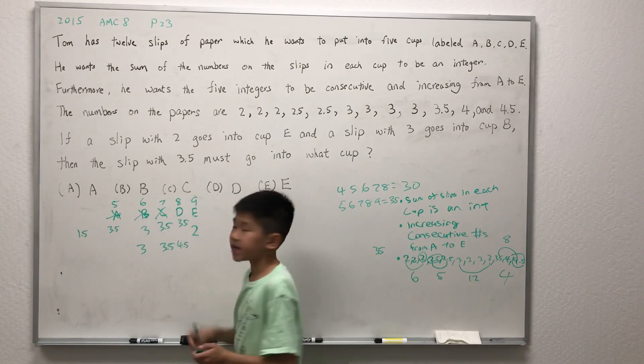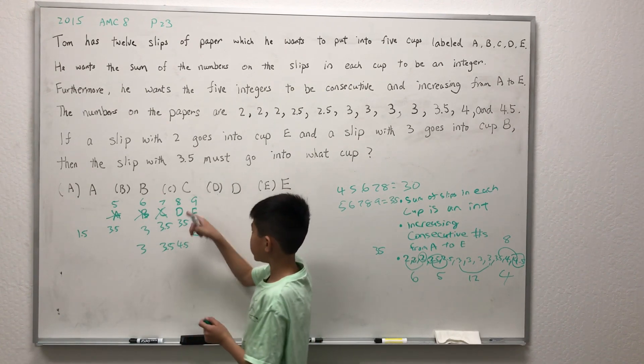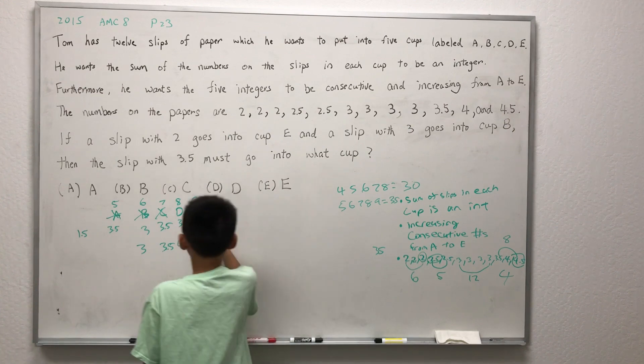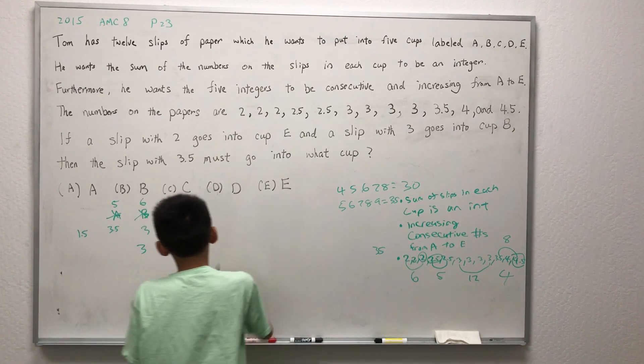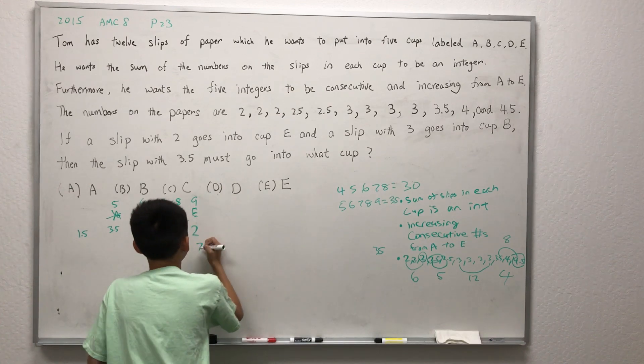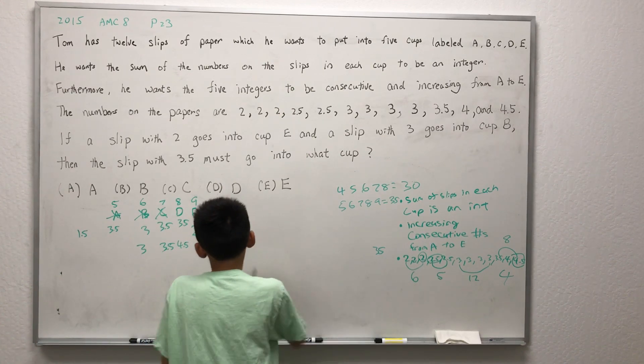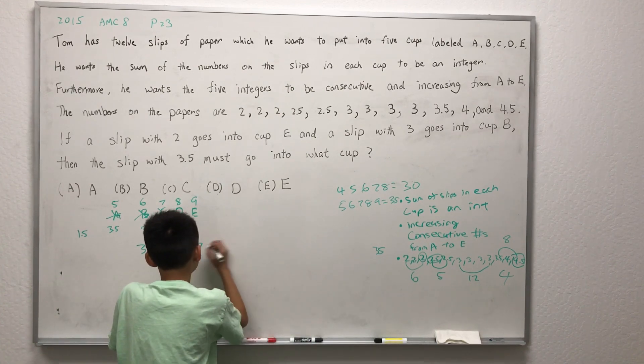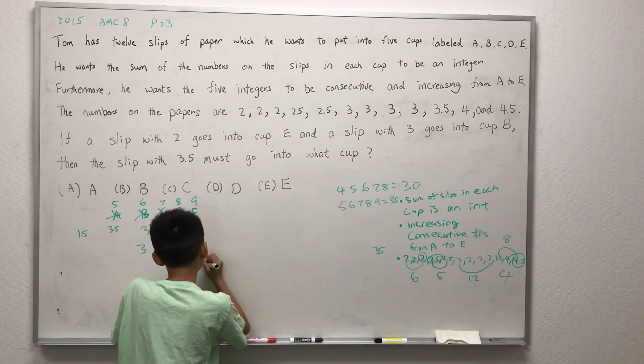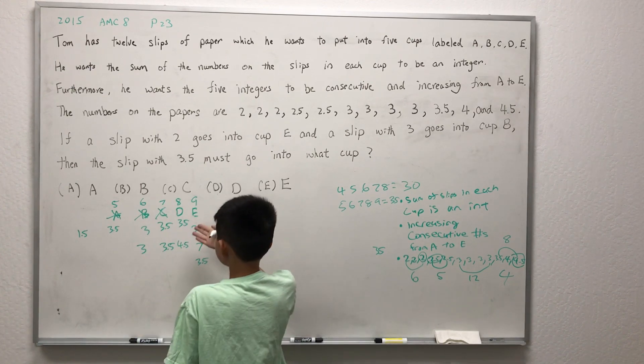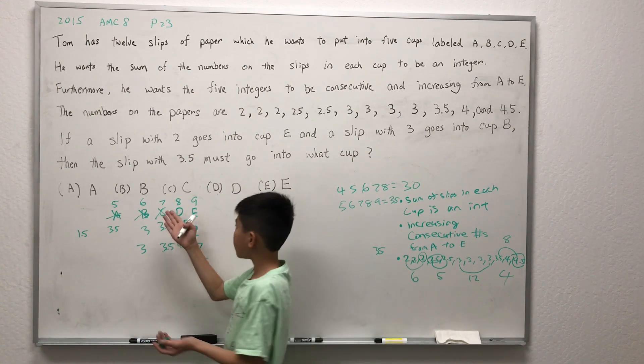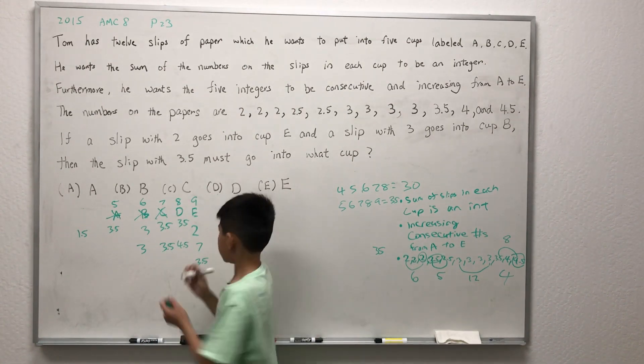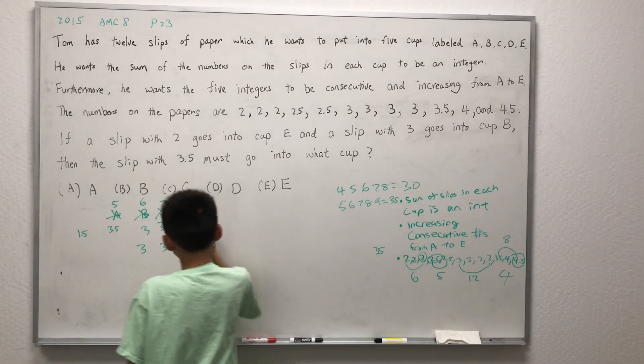Let's see if we can eliminate E so D could be our answer. In E, we already have a slip of 2 in it, so we have 7 left. If we plug in the value of 3.5 into 7, then there will be 3.5 left, which is exactly the same case as C. We know the C option is bad, so the E option must be bad too.